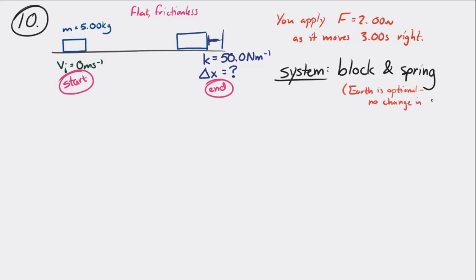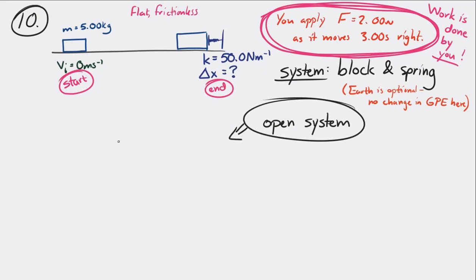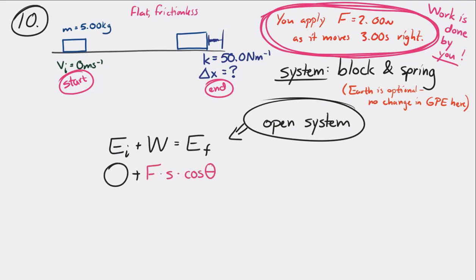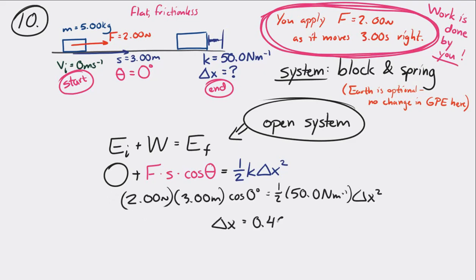We don't have to include the Earth, and since it's frictionless with no air resistance, we don't have to worry about those. But we do apply a force over a displacement, so there is work being done — you're adding energy to the system, making this an open system. So EI plus the work done by you equals EF. The object starts at rest, so initial energy is zero. Then work equals Fs cosine theta: the force was two newtons over a displacement of three meters, and the angle between force and displacement is zero degrees. That equals one-half times the spring constant times delta x squared. Solving for delta x: 0.490 meters is the maximum compression of the spring.